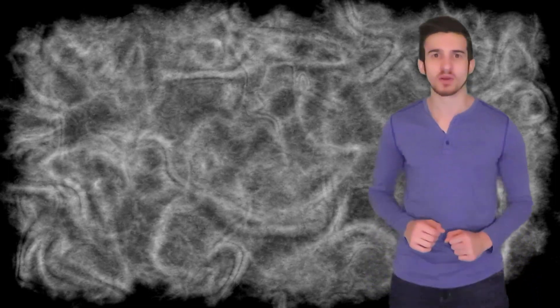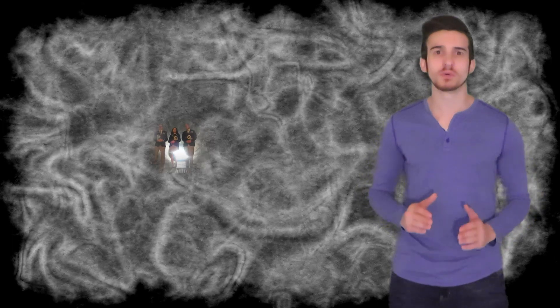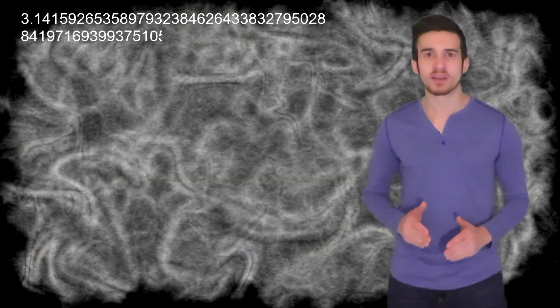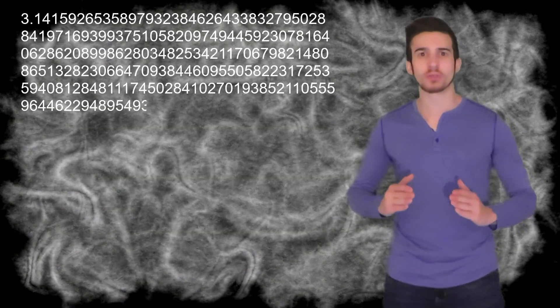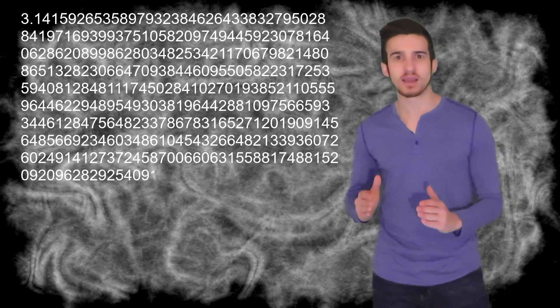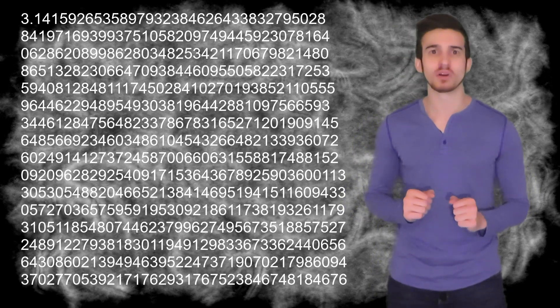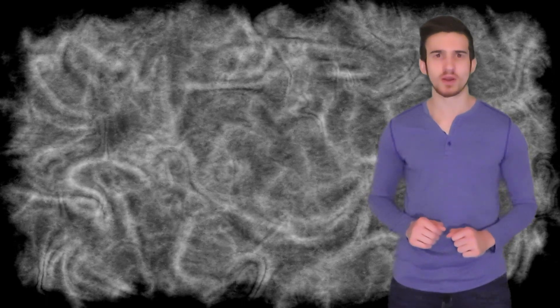In 1981, a man by the name of Rajan Mahadevan walked into a room with several Guinness Book of World Records adjudicators. Over the next four hours, Mahadevan will recite the first 31,000 digits of pi, which would secure his place in the 1984 Guinness Book of World Records.